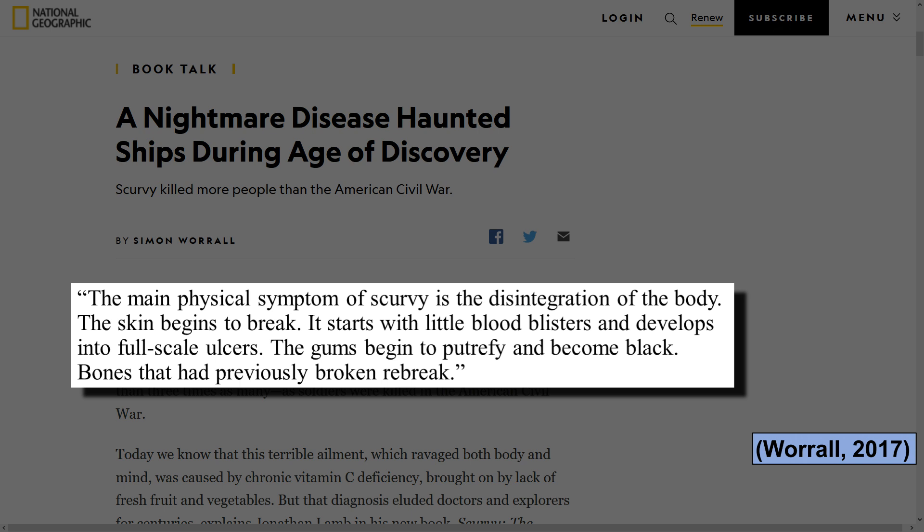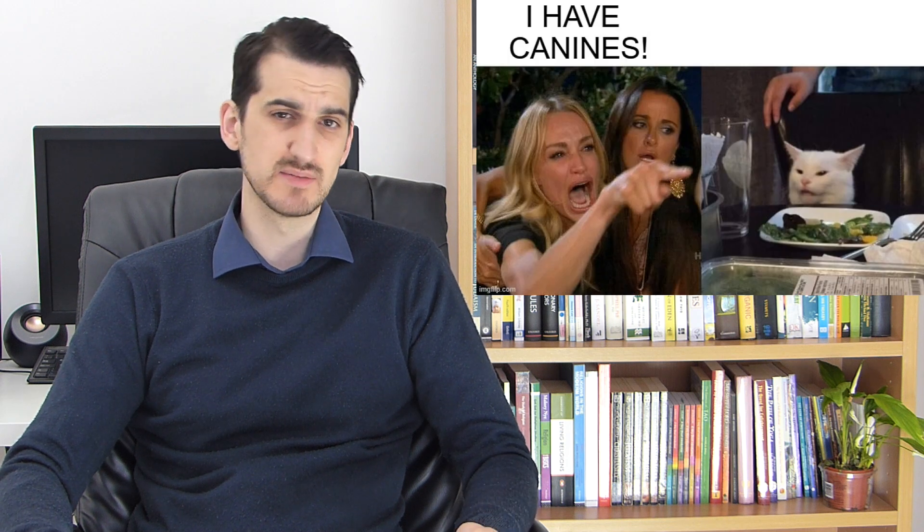As for the claim that animal products like milk, beef and eggs contain all the essential micronutrients, I think he may be overlooking something. What's that nutrient you know the one causes you to die horribly if you don't get enough? Vitamin C, that's it. The thing you need to stave off scurvy, one of the most horrific yet easily preventable diseases there are. The main physical symptom of scurvy is the disintegration of the body. The skin begins to break, the gums begin to putrefy and become black, bones that had previously broken re-break, and it only gets worse from there. So unless you're eating your meat raw or going out of your way to eat specific organ meat such as spleen or pancreas on a regular basis, then this will happen to you on a diet of meat, milk, and eggs.